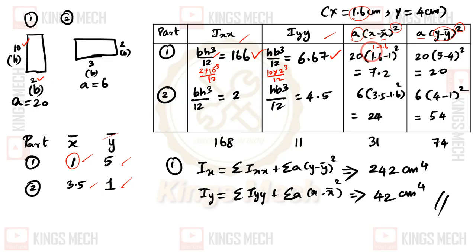1 minus 1.6, we have to take the square value. 20 multiplied by 7.2. Likewise y minus ȳ, the value of y is 5 minus ȳ is 4, so 5 minus 4 squared into 20, we get 20.